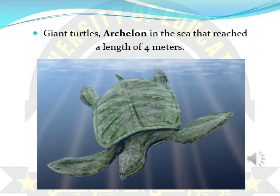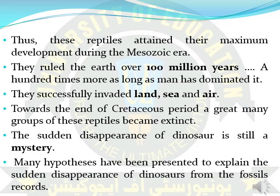In this slide, you can see a giant turtle called Archelon, with a body length of about 4 meters. In previous slides, you have observed the different large sizes of these reptiles. It was found that for approximately 100 million years, they ruled all over the earth and dominated all other organisms. These were the first animals that successfully invaded land, sea, and air.